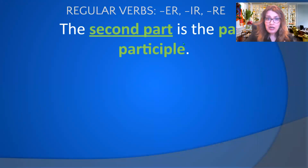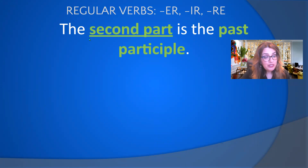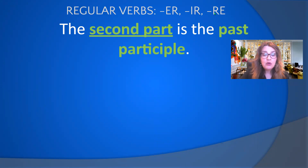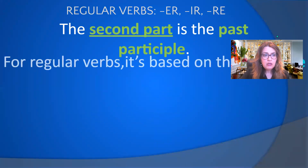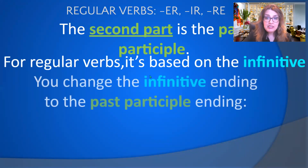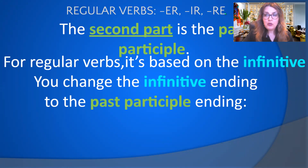Now we are going to examine how to create the second part of the passé composé for regular verbs that end with ER, IR, or RE. For a regular verb, the past participle is based on the infinitive. You change the infinitive ending to the past participle ending. Here is the infinitive ending we drop and replace with the past participle ending.